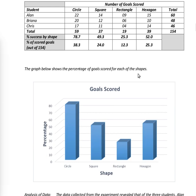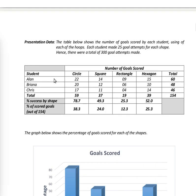Looking at the circle, the percentage success was 78.7%, but the other shapes were really low. The hexagon came in second place, then the square, then the rectangle. The percentage of scored goals out of 154: the highest was 38.3% for the circle, then the hexagon, then the square, then the rectangle — percent success by shape.